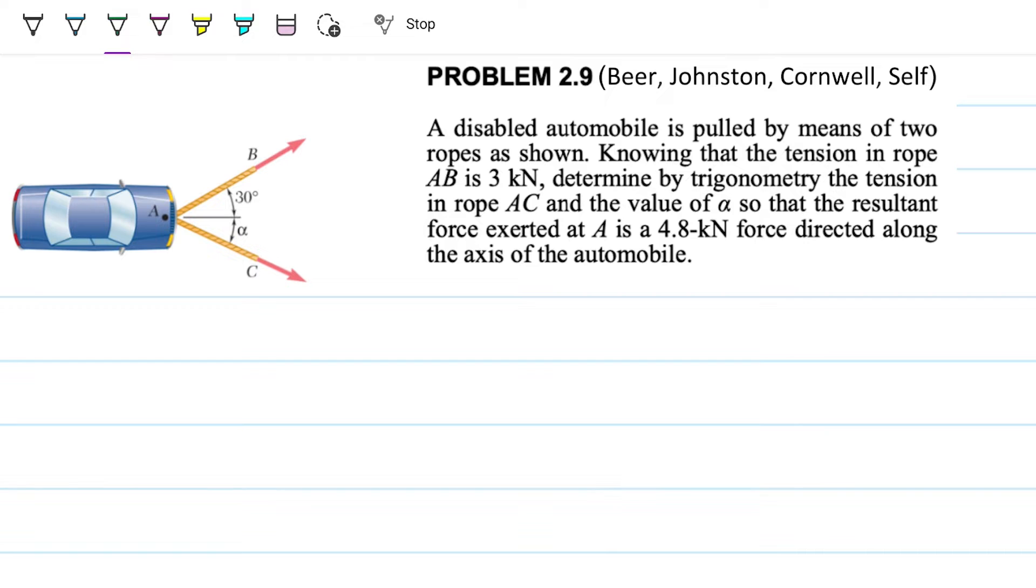So the problem statement reads: A disabled automobile is pulled by means of two ropes as shown. Knowing that the tension in rope AB is 3 kN, determine by trigonometry the tension in rope AC and the value of alpha, so that the resultant force exerted at A is a 4.8 kN force directed along the axis of the automobile.